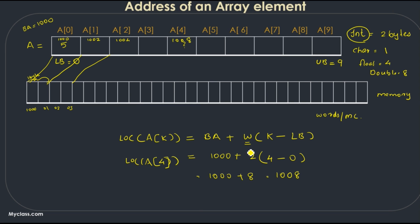The important thing to remember is the value of w for each data type. For a character array, w equals 1. So the location of a[4] equals 1000 plus 1 multiplied by 4, which is 1004. The fifth element a[4] should be at memory location 1004 if this is a character array. In this equation we are calculating the address of an array element. Thank you.